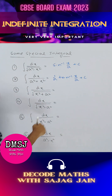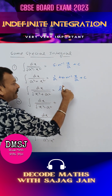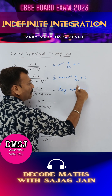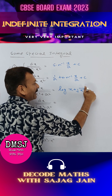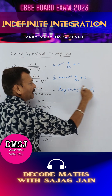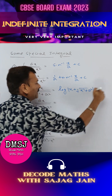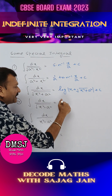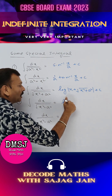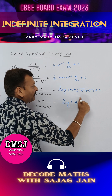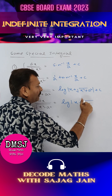dx upon under root of x square plus a square equals log of x plus under root of x square plus a square plus c. dx upon under root of x square minus a square equals log modulus of x plus under root of x square minus a square plus c.